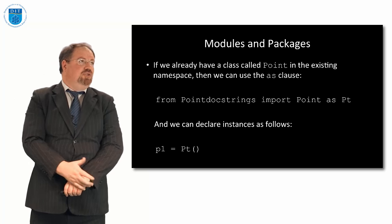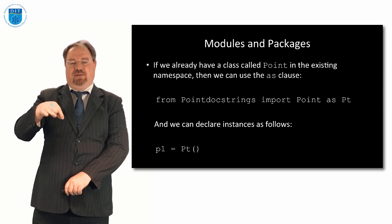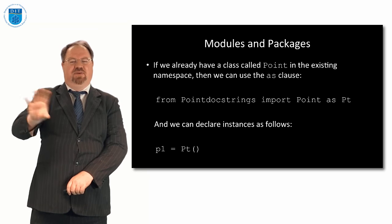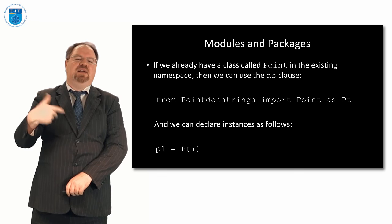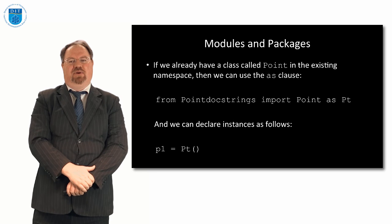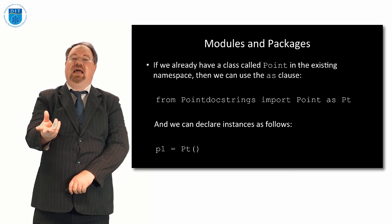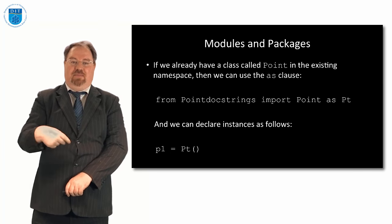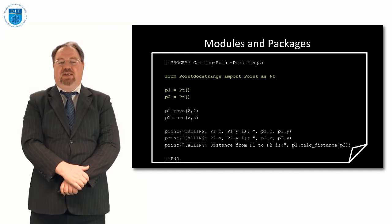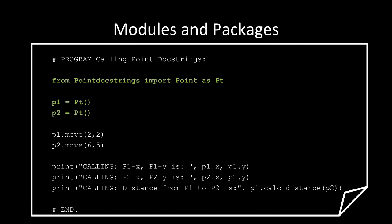If by some unusual circumstance we already have a class called point in the calling program, and we want to import a different point that also has the same name, we can import it as PT. So the class we're importing is point, but it's renamed as PT because a class called point is already in our namespace. Then we go p1 equals PT. In code: from docstrings import point as PT, then declare instances of PT.